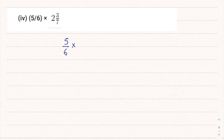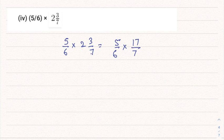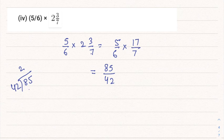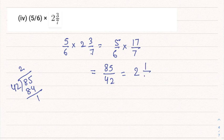Part 4: 5/6 multiplied by 2³⁄₇. Convert 2³⁄₇: 2 sevens are 14, plus 3 gives 17/7. Multiply: 17 into 5 is 85, and 6 sevens are 42, giving 85/42. This is an improper fraction — 42 twos are 84 and the remainder is 1 — so this can be written as 2 and 1/42.